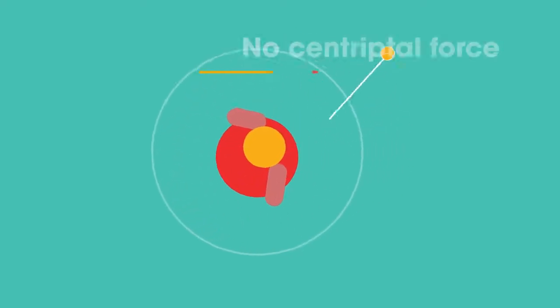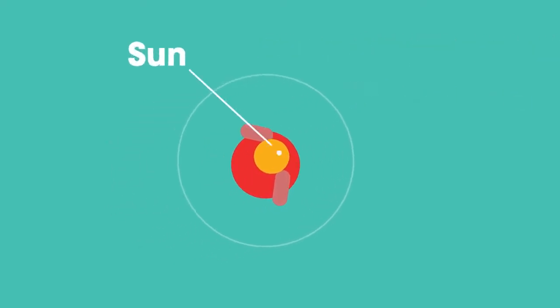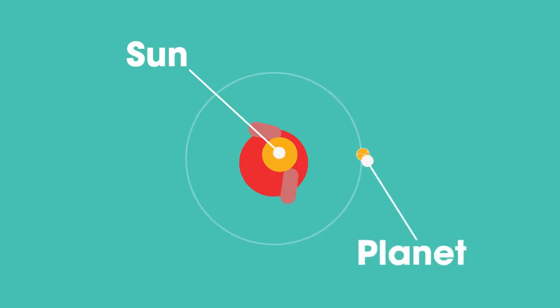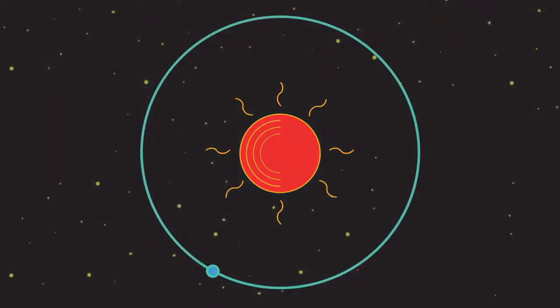However, if you let go of the string, no more centripetal force - the ball just continues in a straight line. Now think of you as the Sun and the ball as a planet. Without the force of gravity, the planets couldn't stay in orbit.